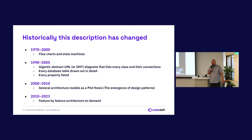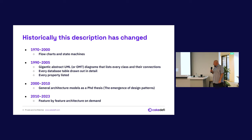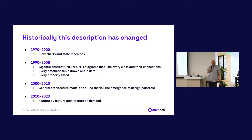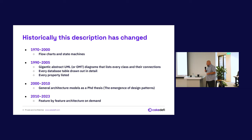Historically, what we call architecture has changed a lot. Before the year 2000, it was all about drawing flow charts and state machines. From 1990 to 2005 — I was already working back then — you would draw up gigantic UML diagrams, class diagrams. There was a competing model called OMT, not so popular. Also, database designs used to take up entire walls because people would print them and list every property. This was more designed for a waterfall era.